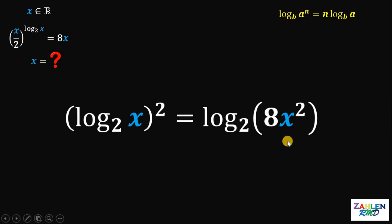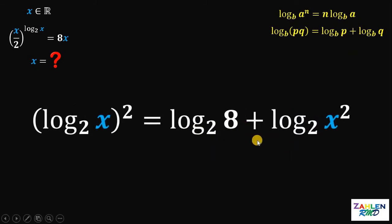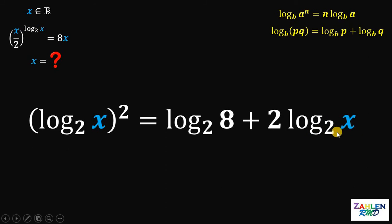On the right-hand side, let's use the property: logarithm of p times q to the base of b equals logarithm of p to the base of b, plus logarithm of q to the base of b. Therefore, the right-hand side becomes logarithm of 8 to the base of 2, plus logarithm of x squared to the base of 2. Using the power rule, logarithm of x squared to the base of 2 is just 2 times logarithm of x to the base of 2.